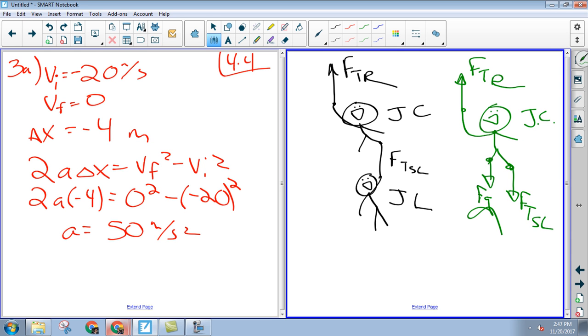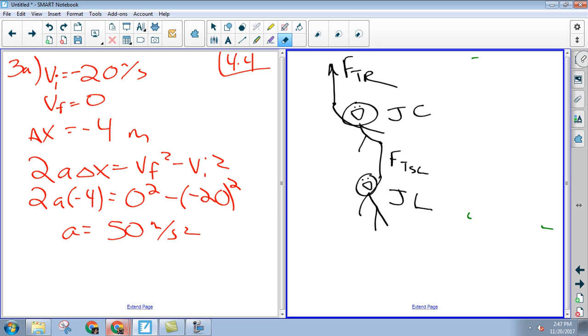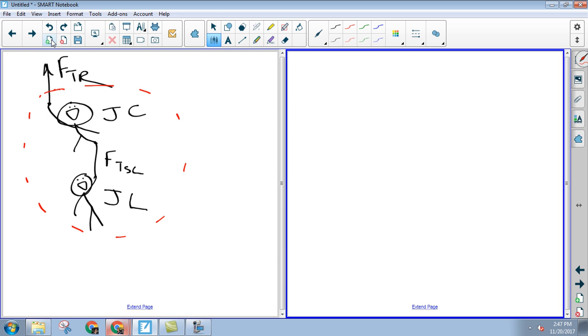All right, so the thing I keep suggesting to you guys is that you're usually best to begin by looking at the system. All right, so let's do this. Let's look at that system right there. So here's my Jackie Chan Jet Li system. It's got a combined mass of 135 kilograms, right?